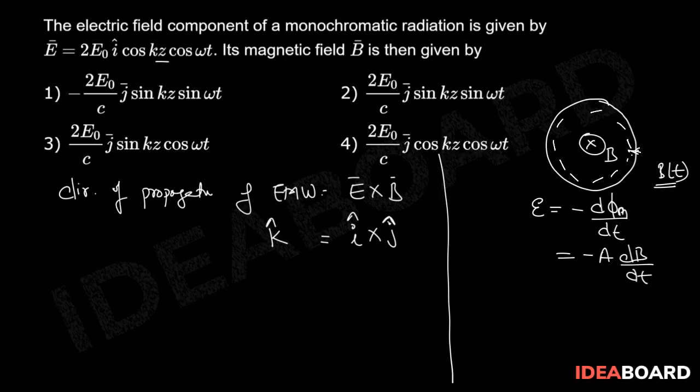Induced EMF is nothing but work done moving a unit positive charge along the closed loop. So EMF I can write as ∮E·dl, where E is the non-conservative electric field around the coil. Now we are going to apply this scenario to the electromagnetic wave.